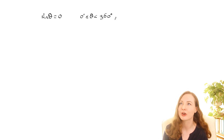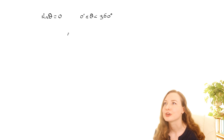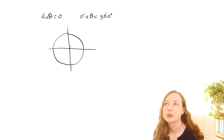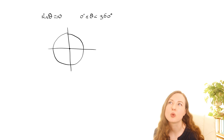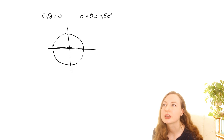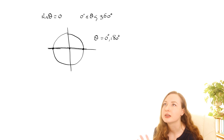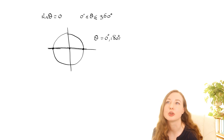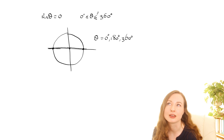Let's have a go at sin theta equals 0 for theta between 0 and 360. We want the y-coordinate to be 0, so you might be confused about whether the line should be vertical or horizontal. You can think of it as y equals 0.0001 — just go up a little bit — and it's going along like that, giving two intersection points. So we could say theta equals 0 degrees or 180. If the range said less than or equal to 360, then you would also have to include 360 degrees, giving three solutions.